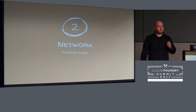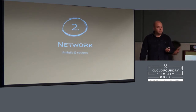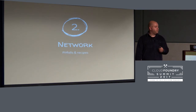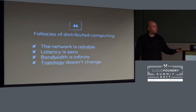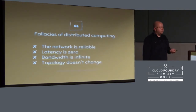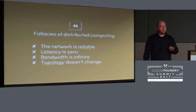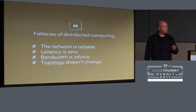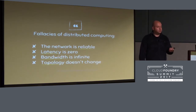The first topic we want to touch is networking and the problems we had there. If you do a search about distributed computing, you might end up reading the fallacies of distributed computing. We knew we'd have problems — the network is not reliable, latency will be a problem, bandwidth also will be a problem, and the topology of Cloud Foundry or our application would not stay the same. But knowing and believing these things are different, and Stoyan will present how we became believers.